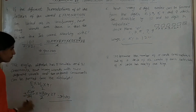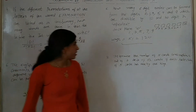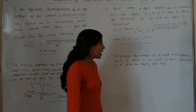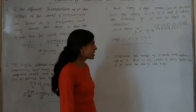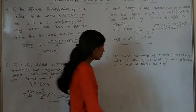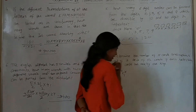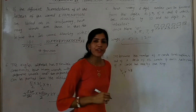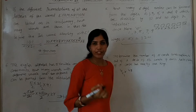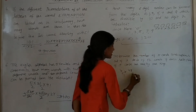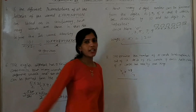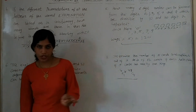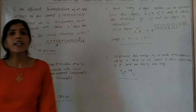Theek hai? Question number 8: Determine the number of 5-card combinations out of a deck of 52 cards if each selection of 5 cards has exactly 1 ace. Dekho, humare paas 4 aces hote hain, unme se 1 le liya. Ab humare paas baaki cards kitne rahe? Total 52 hote hain, 4 nikaale — 48 rahe. Ab humne select kitne karne hain? 5 cards lene the, 4 aur karne hain. Yeh hamara answer aayega: 4C1 × 48C4.